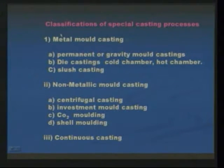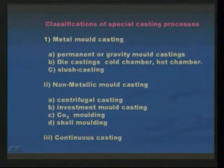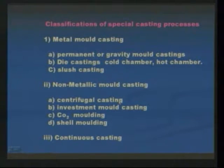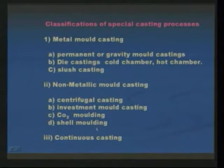Depending upon the applications, these are classified as: first, metal mold casting — which includes permanent mold casting, die casting (with cold chamber and hot chamber types), and slush casting. For non-metallic molds: centrifugal casting, investment casting, CO2 molding, and shell molding. The last one is continuous casting. In permanent mold or gravity die casting, it is done with permanent molds made of cast iron or steel. This mold can be reused many times. Applications include carburetor parts, hydraulic brake cylinders, connecting rods, pistons, oil pump bodies, CI pipes, sewage pipes, IC engine liners, rings, and other annular components.